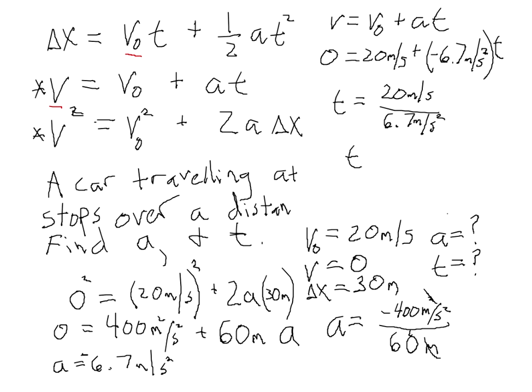So the time that it takes to stop is slightly over, well, let's see, it's just about 3 seconds. We'll have to use a calculator if I want to get it right to 3 significant figures. So we'll take 20 divided by 6.7, and you get 2.99 seconds. So right at 3 seconds, 2.99 seconds is the amount of time that it takes that car to slow down from 20 meters per second to zero.